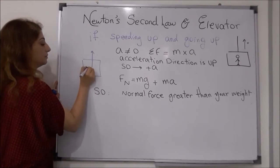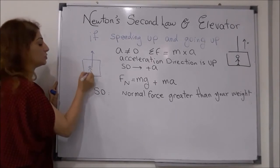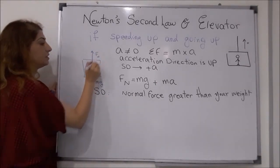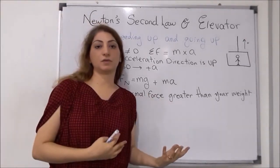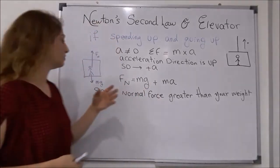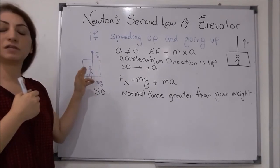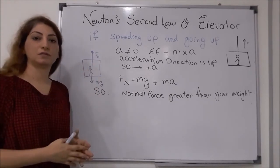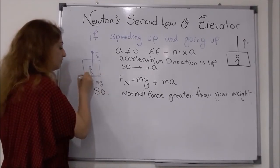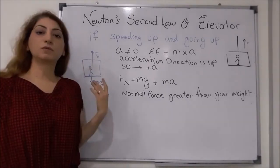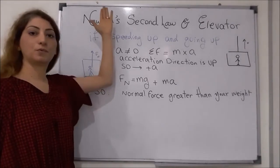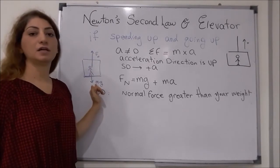So the normal force here is much greater than the weight of the object. For better understanding, I can draw the diagram. It is moving upward and the person is standing here, so it has a weight which is m times g pointing downward. There is a normal force exerted by the floor of the elevator that doesn't let the person fall down. The normal force is much greater than the weight of the object because it is accelerating upward.